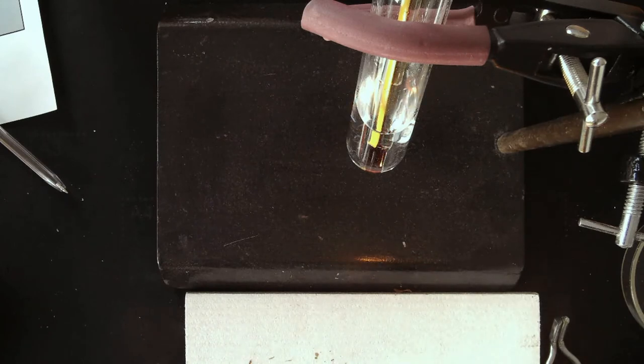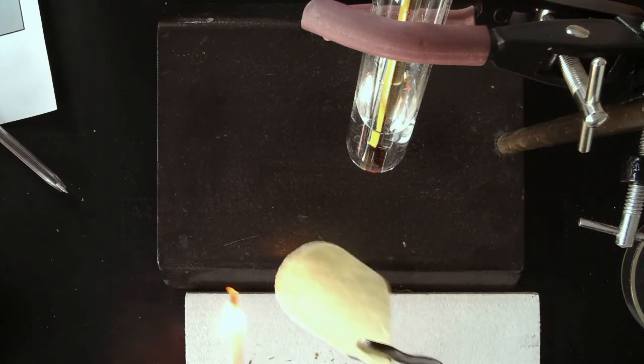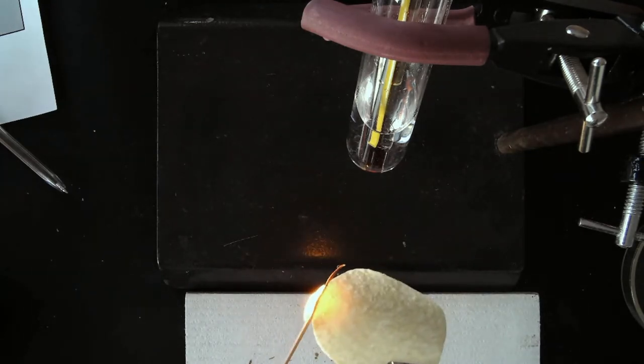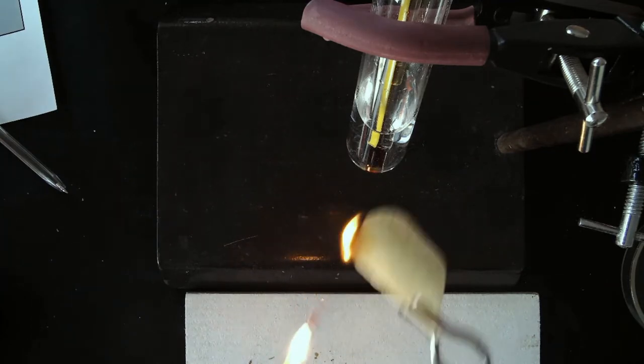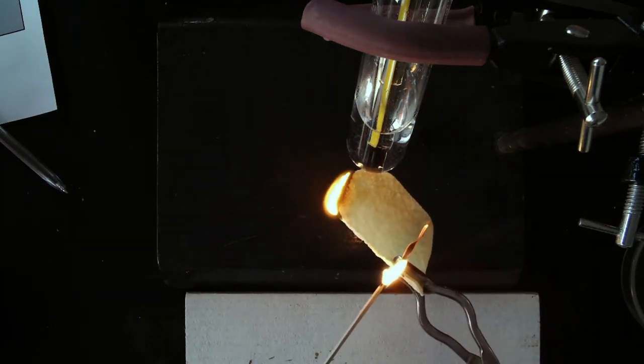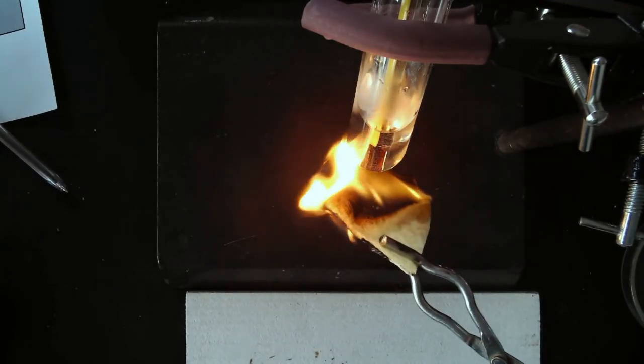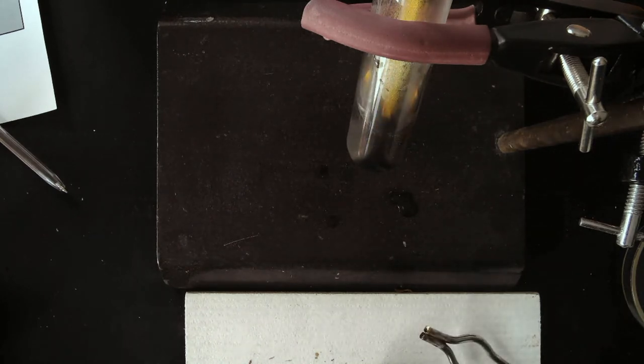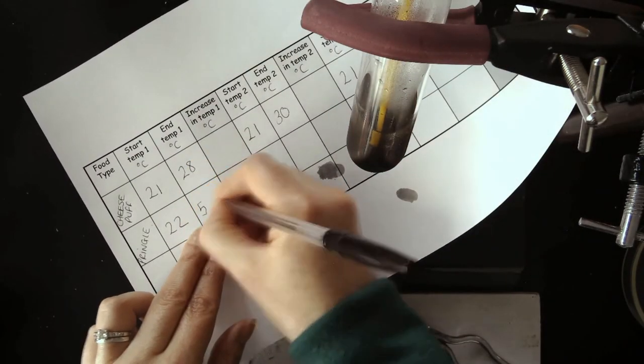I'm now set up ready to do the second type of crisps. I'm going to use the Pringle. So let's try and light the Pringle. There we go. That's caught. Let's try and light it here as well. Much bigger flame this time. Okay. The flame has completely died out. So I need to quickly take the temperature of the water, and that has gone up to 52 degrees. So the start temperature was 22, and that has increased to 52.